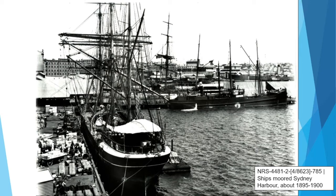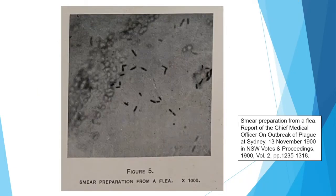The World Health Organisation considered the plague pandemic to be active until 1960. In 1894, bacteriologists isolated the responsible bacterium, which is called Yersinia pestis, and determined that the common form of transmission of this bacteria was the flea.